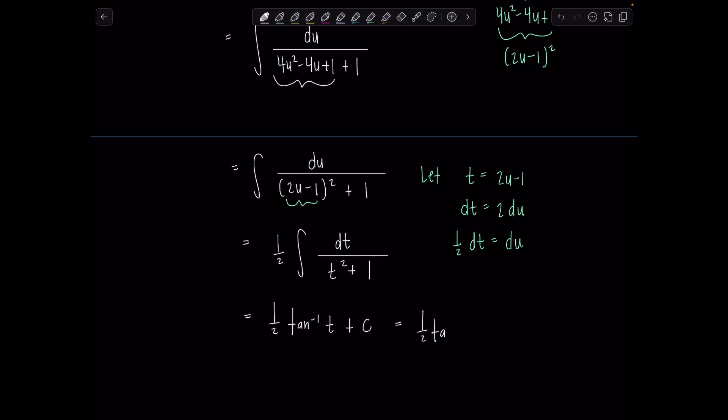So this is one-half tan inverse of t plus c, which is one-half tan inverse of two u minus one plus c. I want you to notice something so you could actually start just jumping straight to here in the future. You have this variable quantity squared plus a constant squared. We know that's the form that we have when we are looking at antiderivative that results in tan inverse. Because of this two, all that happened from the substitution is we pick up a one-half in the antiderivative.